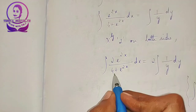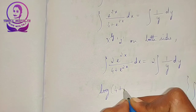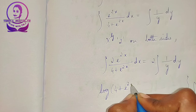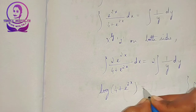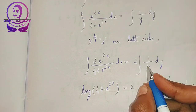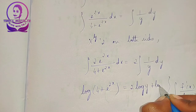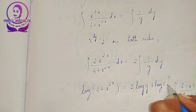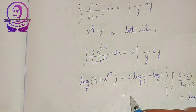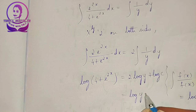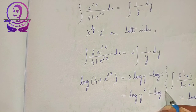Applying that formula here, I can write this as log of the denominator — log of 4 plus e to the power of 2x — is equal to 2 into log y plus log c, taking the integration constant as log c. Now this 2 into log y is of the form n log m, which can be written as log y to the power of 2 plus log c.